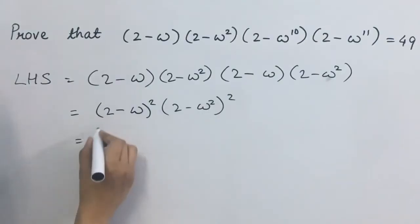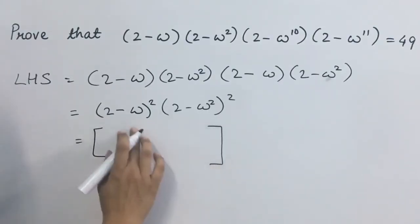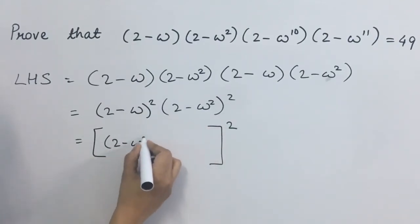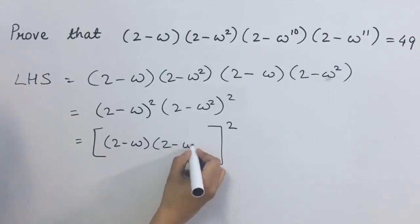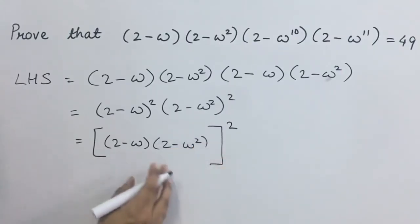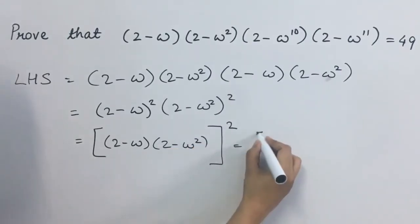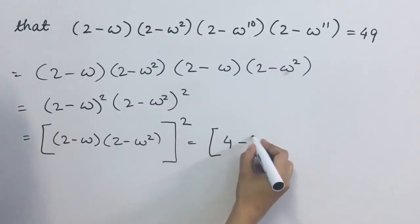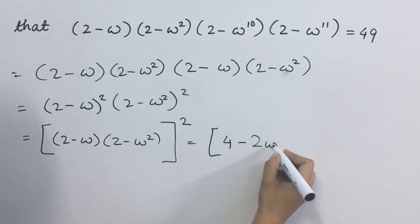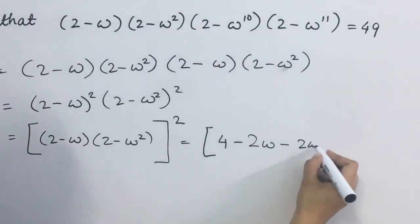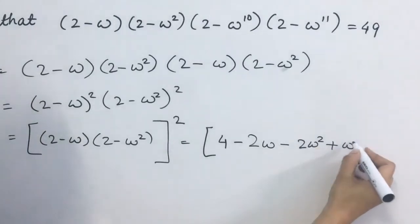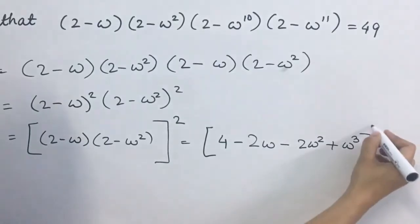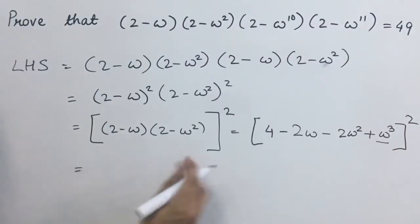Now we can open the brackets, kis tarah se? Yeh jo square hai, yeh hum overall lehenge aur andar bache ga sirf 2 minus omega and 2 minus omega square. Opening the brackets, we get 4 minus 2 omega minus 2 omega square plus omega cube whole square. This is equal to 4.